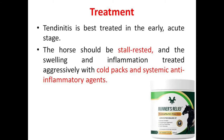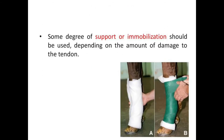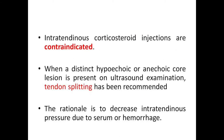Coming to the treatment, tendinitis is best treated in the early acute stage. The horse should be stall rested and the swelling and inflammation treated aggressively with cold packs and systemic anti-inflammatory agents. Some degree of support and immobilization should be used depending on the amount of damage to the tendon. This picture shows how to bandage above the tendon. Intratendinous corticosteroid injections are contraindicated when a distinct hypoechoic or anechoic core lesion is present on ultrasound examination.